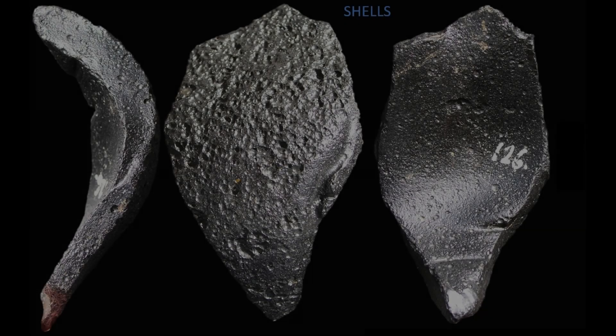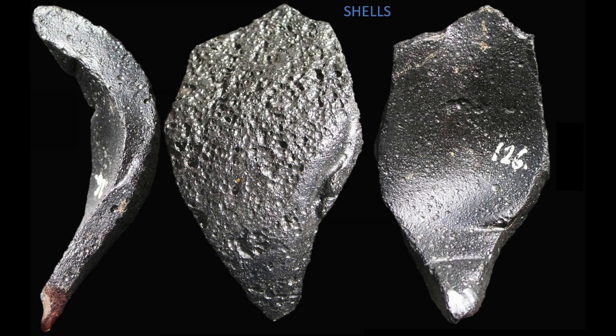Shells from splash-formed tektites are created when a tektite with a low-viscosity nucleus lands, and the solid shell breaks into pieces, being expelled, and the low-viscosity nucleus pops out. Shells are distinctively different from spalls, as they have flat edges — spalls always have at least one sharp edge.